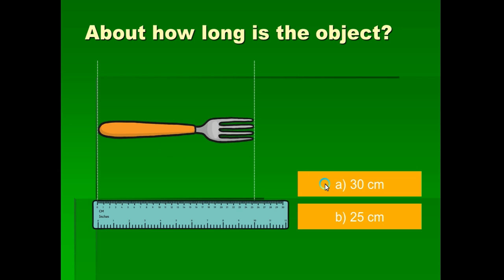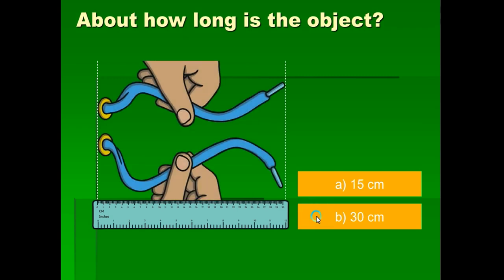Let's see how long this object is — is it 30 or 25? Look at the length of the spoon. It is 25 centimeters. Good job, we are correct! Now, about how long is this other object? From zero it is even more than 30, so the answer is 30 centimeters.